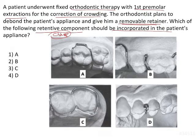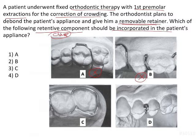Looking at the options: the Ballin clasp runs interproximally. The Adams clasp is usually given in a Hawley's retainer for patients who have undergone non-extraction therapy — the labial bow runs from canine to canine, and the Adams clasp is placed on the first molars. Since the Adams clasp also runs interproximally, it should not be given in this extraction case either.